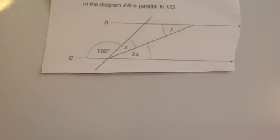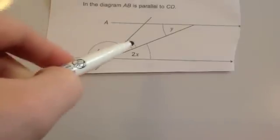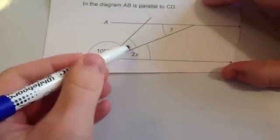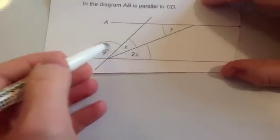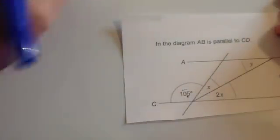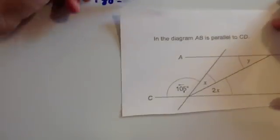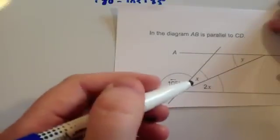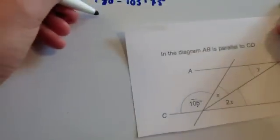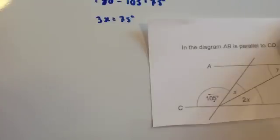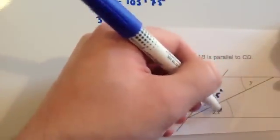The last question has algebra involved — calculate angle X and angle Y. The 105 and the two angles on the straight line add up to 180, so those two angles are 75 degrees. These two angles are X and 2X, so 2X plus X is 3X equals 75 degrees. Dividing both sides by 3 gives X equals 25 degrees. So this angle is 25 degrees and the 2X angle is 50 degrees.